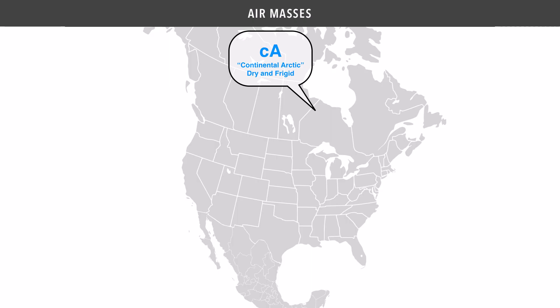The fact that it formed over land makes it a dry air mass, and because it is so far from the equator, up near the North Pole, it's an extremely cold air mass. CA air masses rarely make it all the way down to the United States, though they do have an impact on our weather.